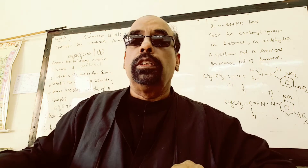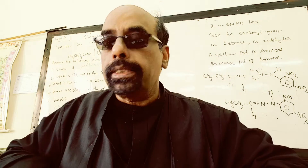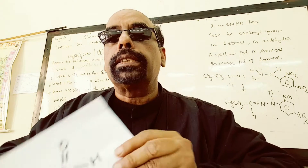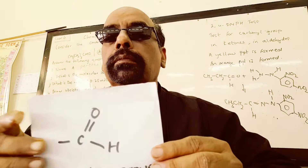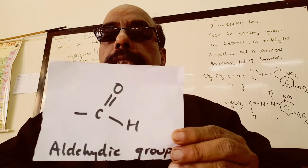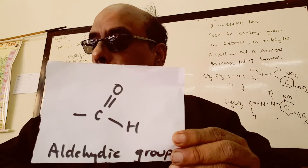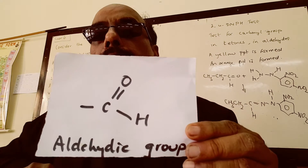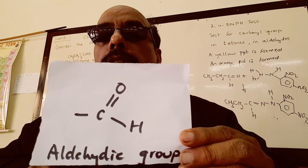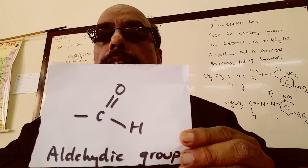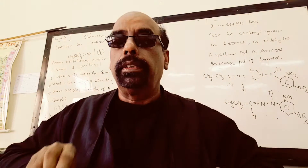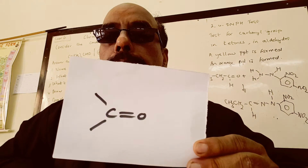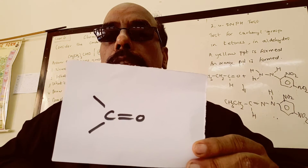2,4-DNPH is used to test the carbonyl group present in an aldehyde or a ketone. This is the aldehyde group in an aldehyde, and this is the carbonyl group — the ketonic group — in a ketone.